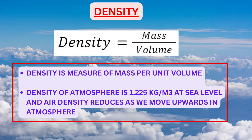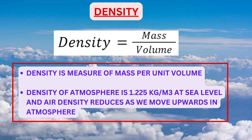What is density? Density is a measure of mass per unit volume. Iron is denser than cotton since the same size of iron metal will be much heavier compared to the same size of cotton. Density of atmosphere is 1.225 kg per meter cube at sea level, and air density reduces as we move upwards in the atmosphere.